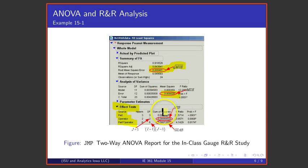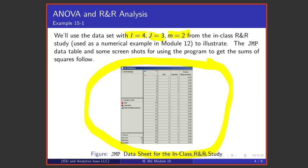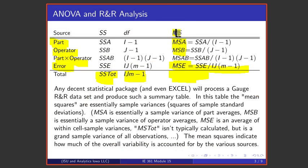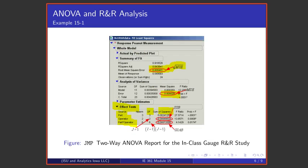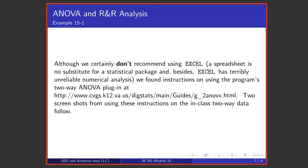There are sums of squares, and if one takes those sums of squares and divides them by the degrees of freedom, one gets the mean squares listed in the general two-way analysis of variance table.